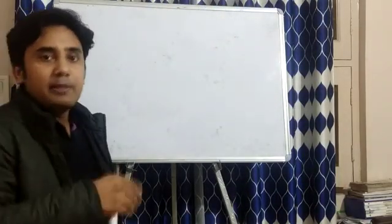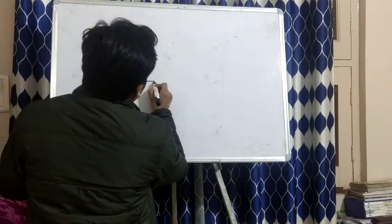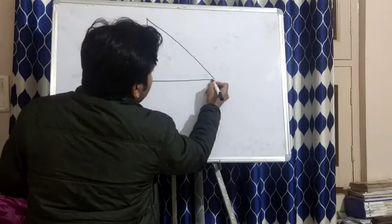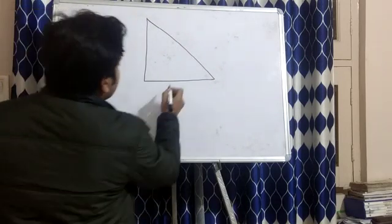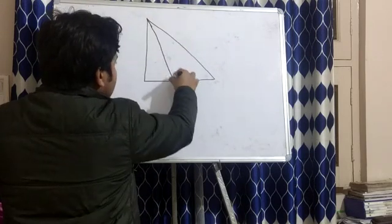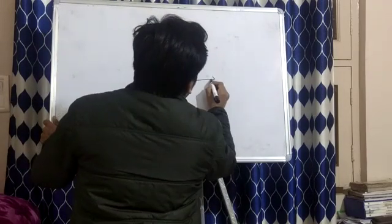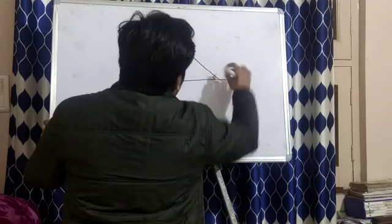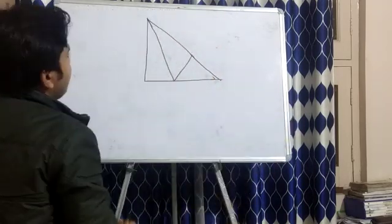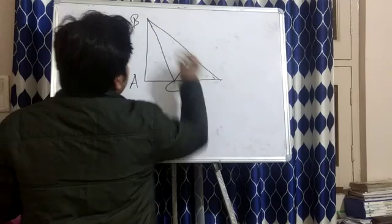Good evening guys. Now let us implement all the rules that we have learned in congruency. Suppose I have an arbitrary triangle — let's draw an arbitrary triangle — and then draw a smaller triangle within this larger triangle. Let us label the vertices as B, C, D, and E.